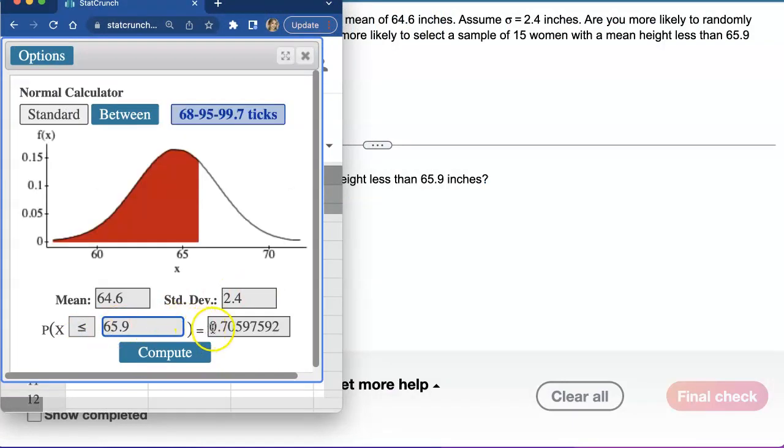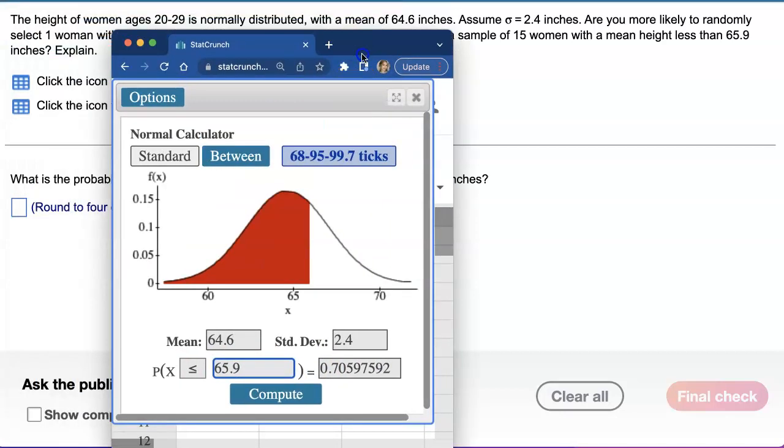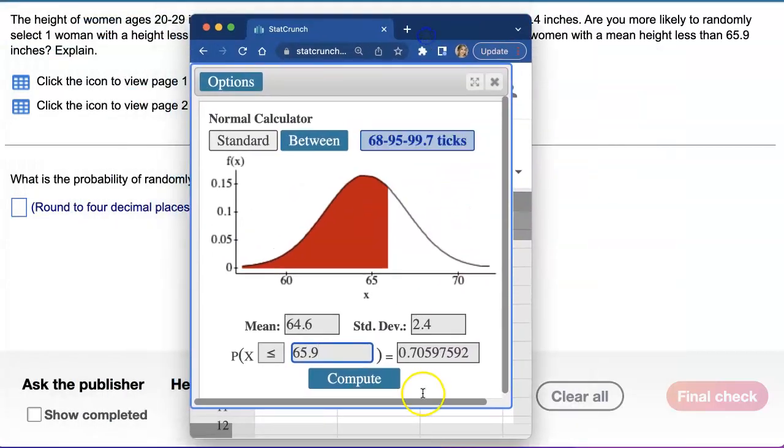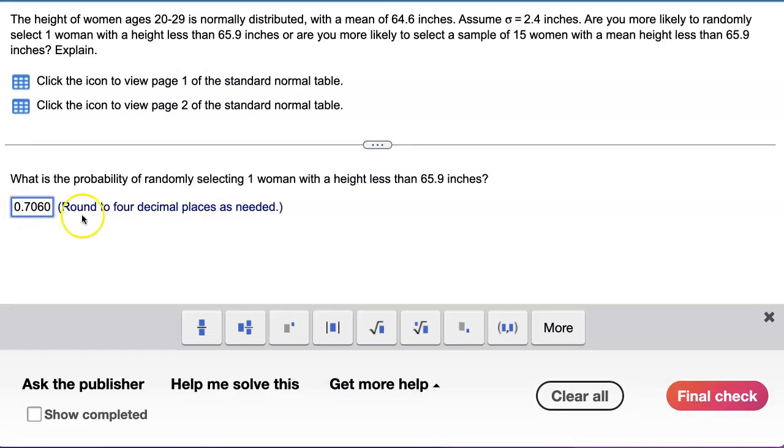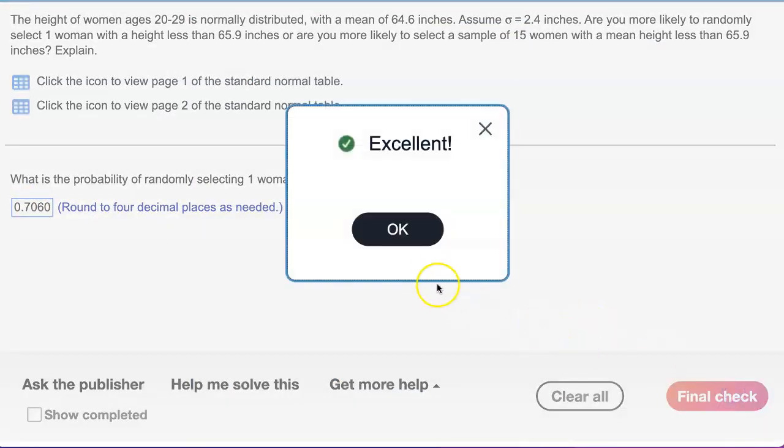That probability is about 70% chance. Now how do they want us to round this? Four decimal places. All right, that's kind of awkward. I will have to round that up to 0.7060. So that's how you find the probability of selecting just one person.